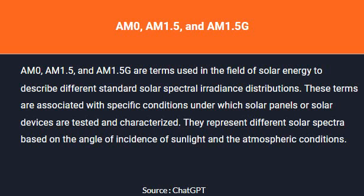AM0, AM1.5, and AM1.5G are terms used in the field of solar energy to describe different standard solar spectral irradiance distributions.